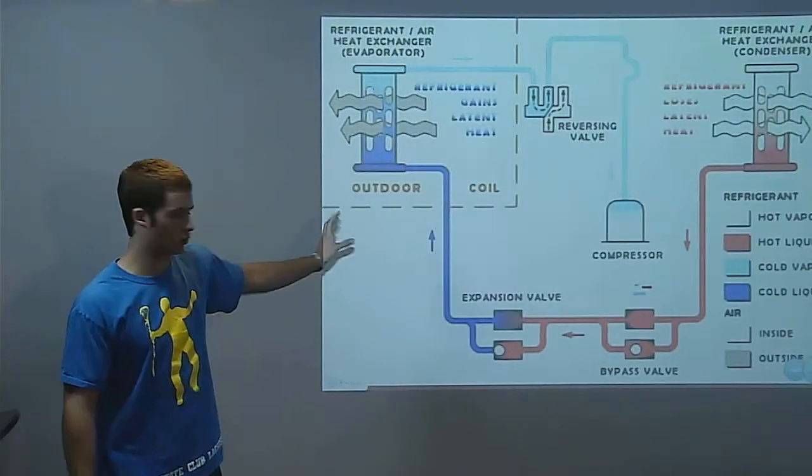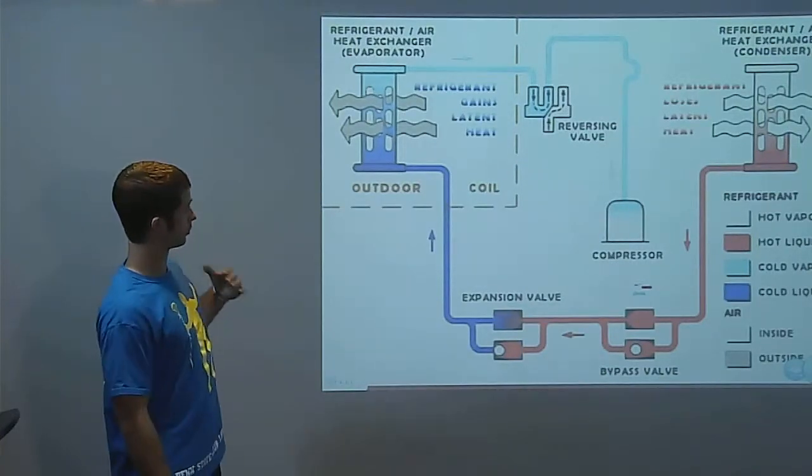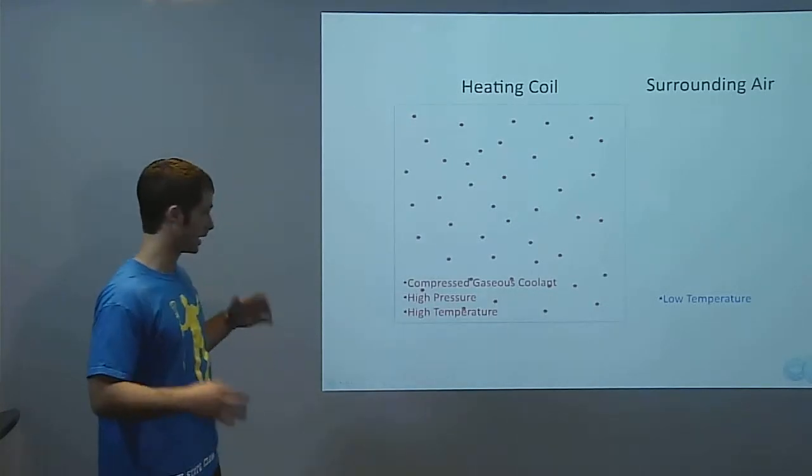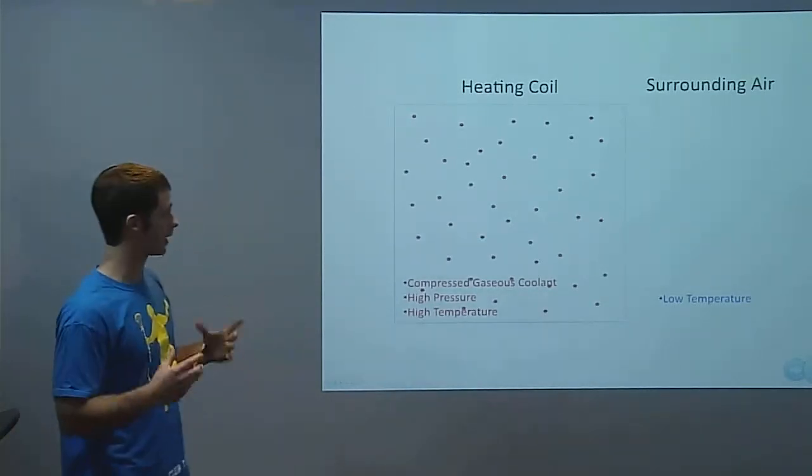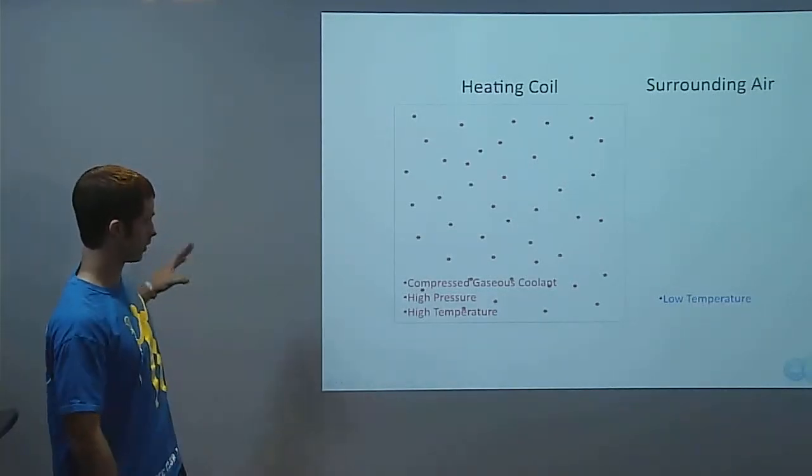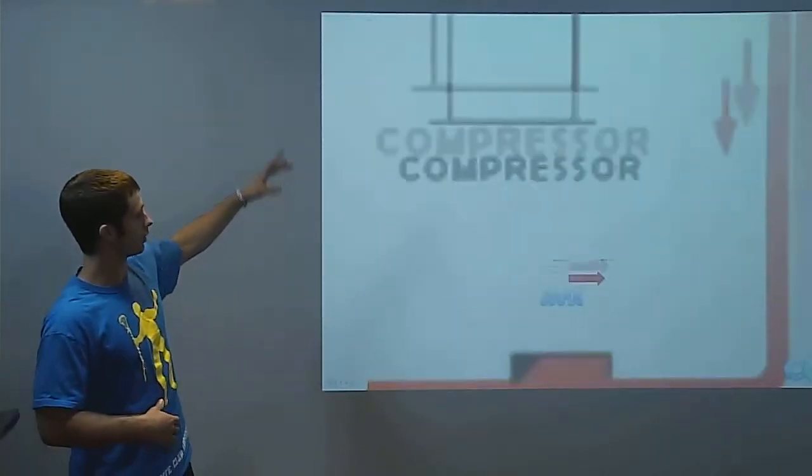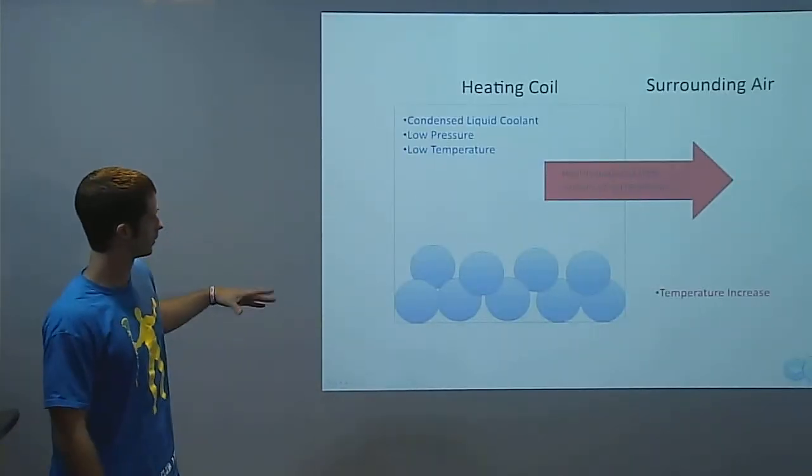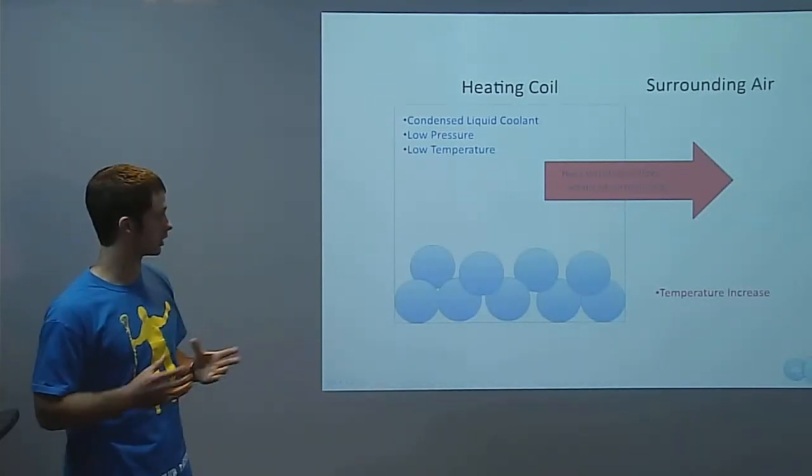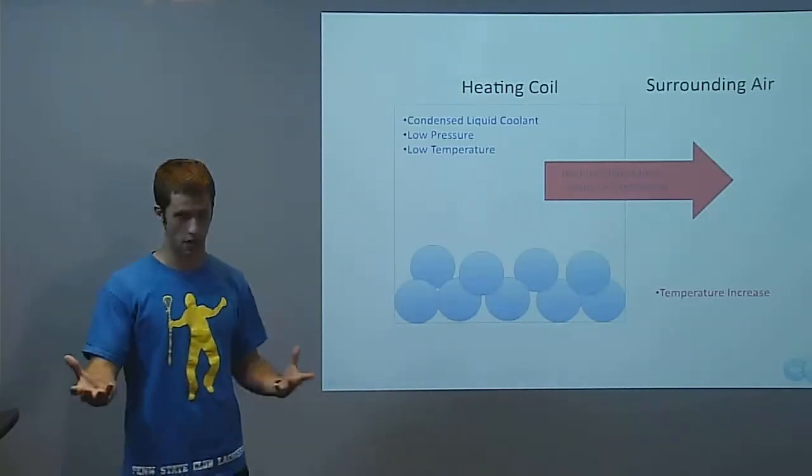In between that outdoor coil and the indoor coil, that gas will pass through a compressor, and what the compressor does is it takes that cool vapor and compresses it, giving it a higher pressure and a higher temperature. So now you have a very hot gaseous vapor flowing into the house, and it will flow through the heating coil. As it flows through the heating coil, that extra heat that's caused by the increased pressure and increased temperature will transfer from the coolant into the surroundings, being your house.